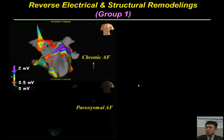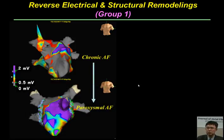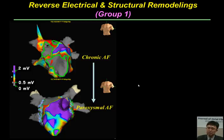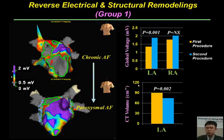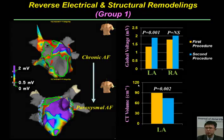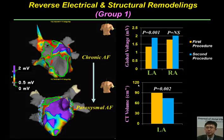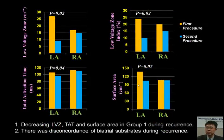In this slide, I will show a typical case from Group 1. During the first procedure, the patient had chronic atrial fibrillation with extensive low-voltage zones in the left atrium. The patient received the ablation procedure but recurred months later as paroxysmal atrial fibrillation. The low-voltage area decreased during the second procedure, and high-voltage areas increased. The global mean left atrial voltage also increased during the second procedure. The right atrial voltage remained the same between procedures. CT volume of the left atrium improved, becoming smaller. This demonstrates reverse electrical and structural remodeling in Group 1 patients.